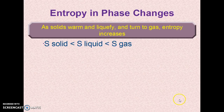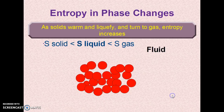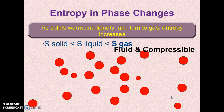In a phase change, as solids warm and liquefy and turn to gas, entropy increases. The entropy of a solid is less than the entropy of a liquid, which in turn is less than the entropy of a gas. In a solid there is some molecular or ionic vibration, but when warmed past the melting point, molecules can move over each other easily — they're not rigidly bound — so there are more states of disorder. The gas has a much higher entropy than the liquid state of the same material.